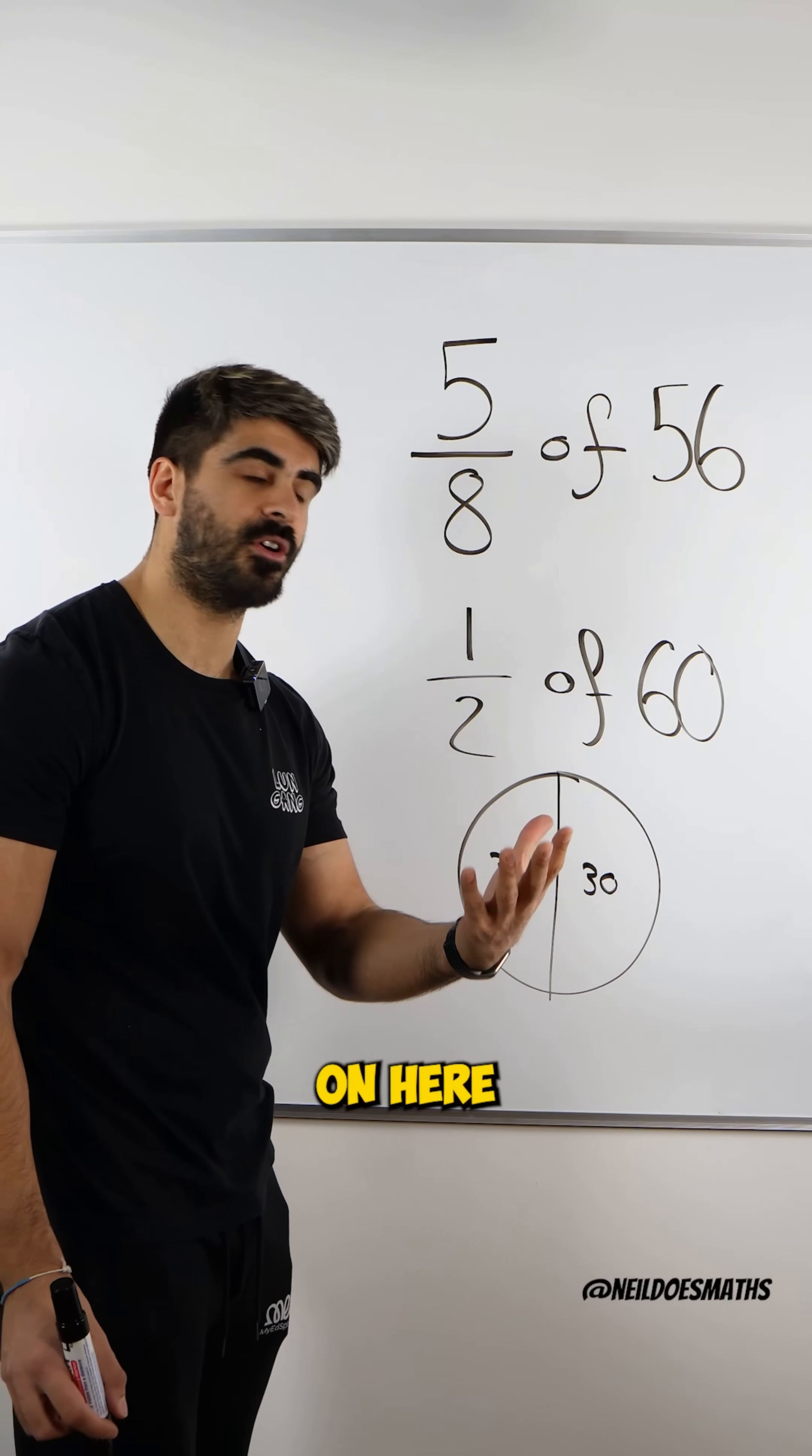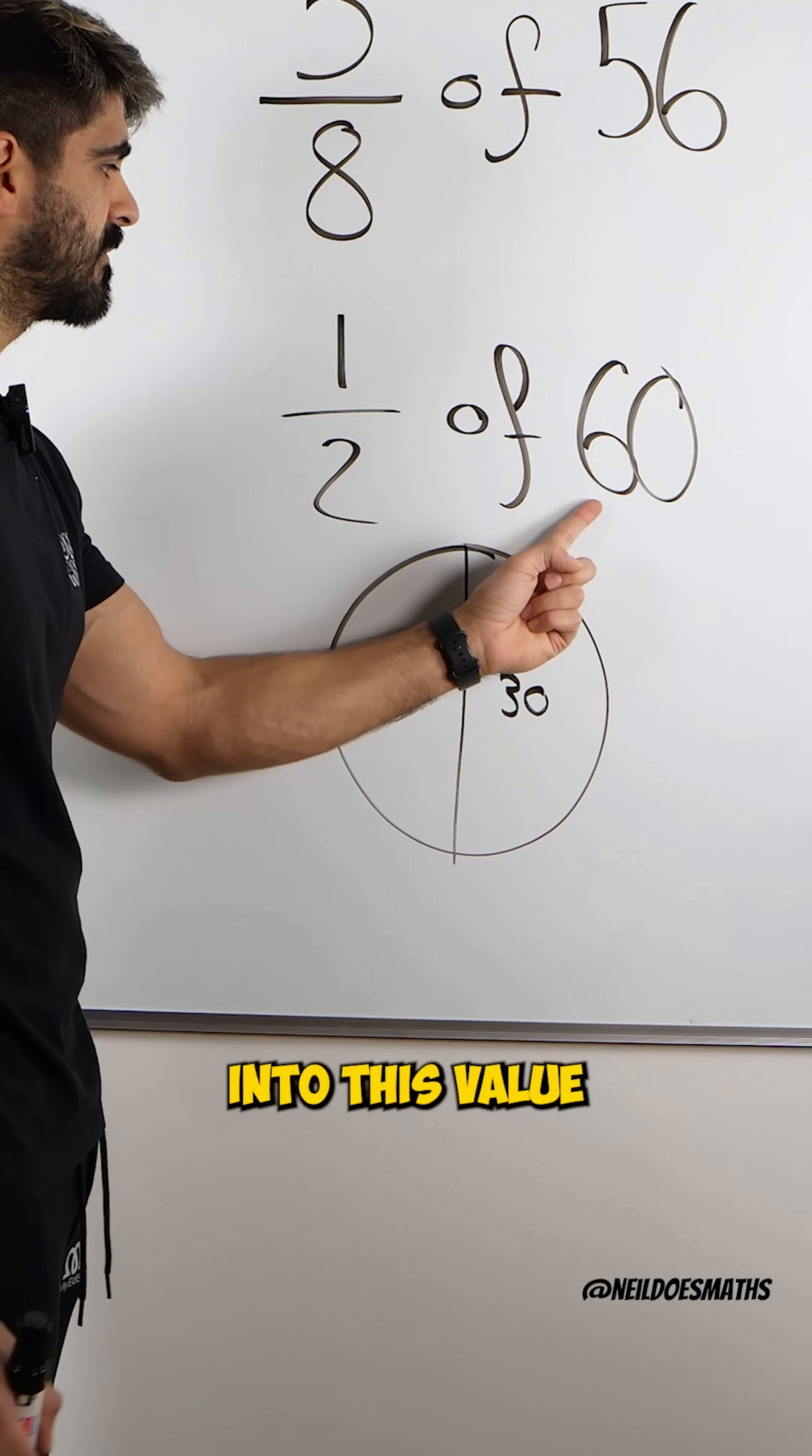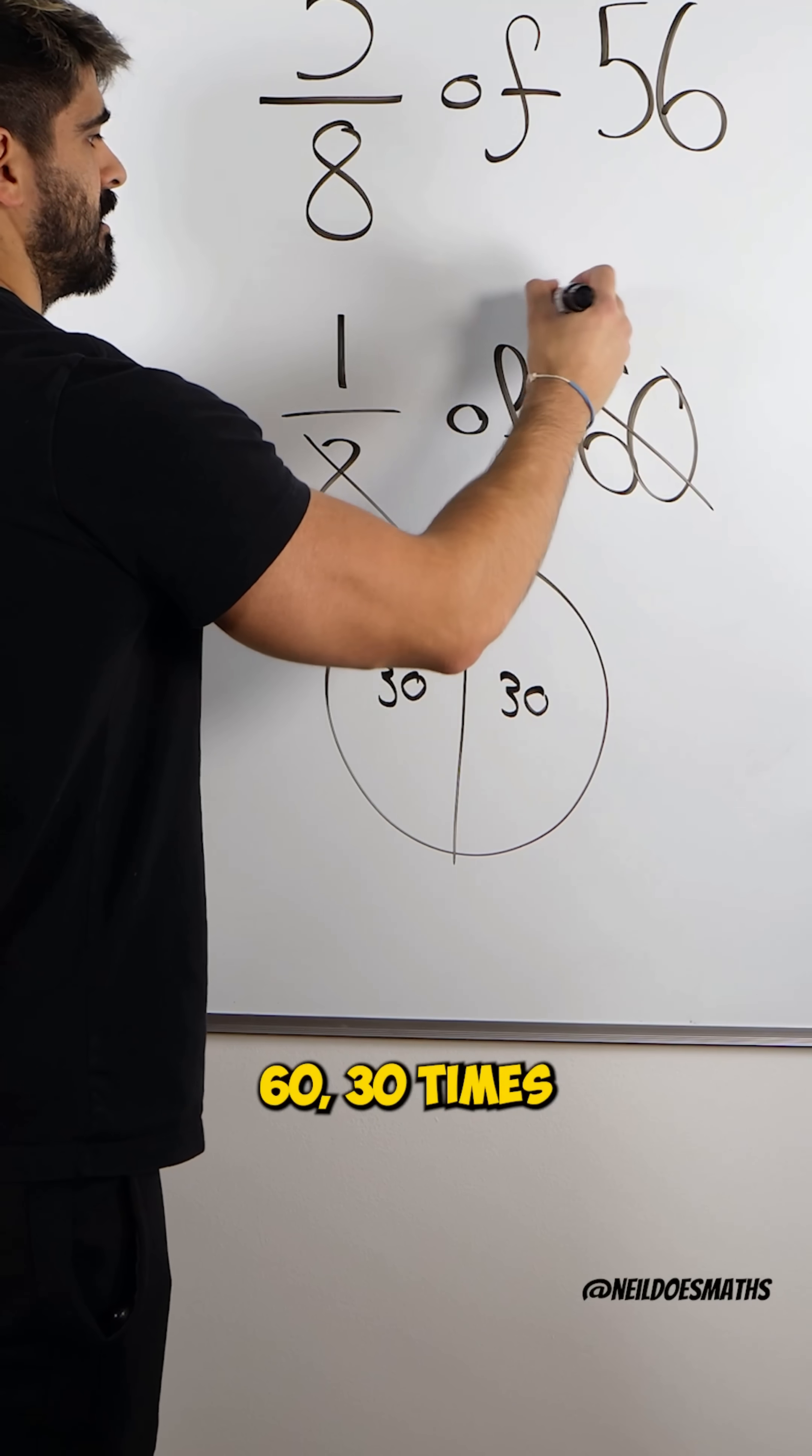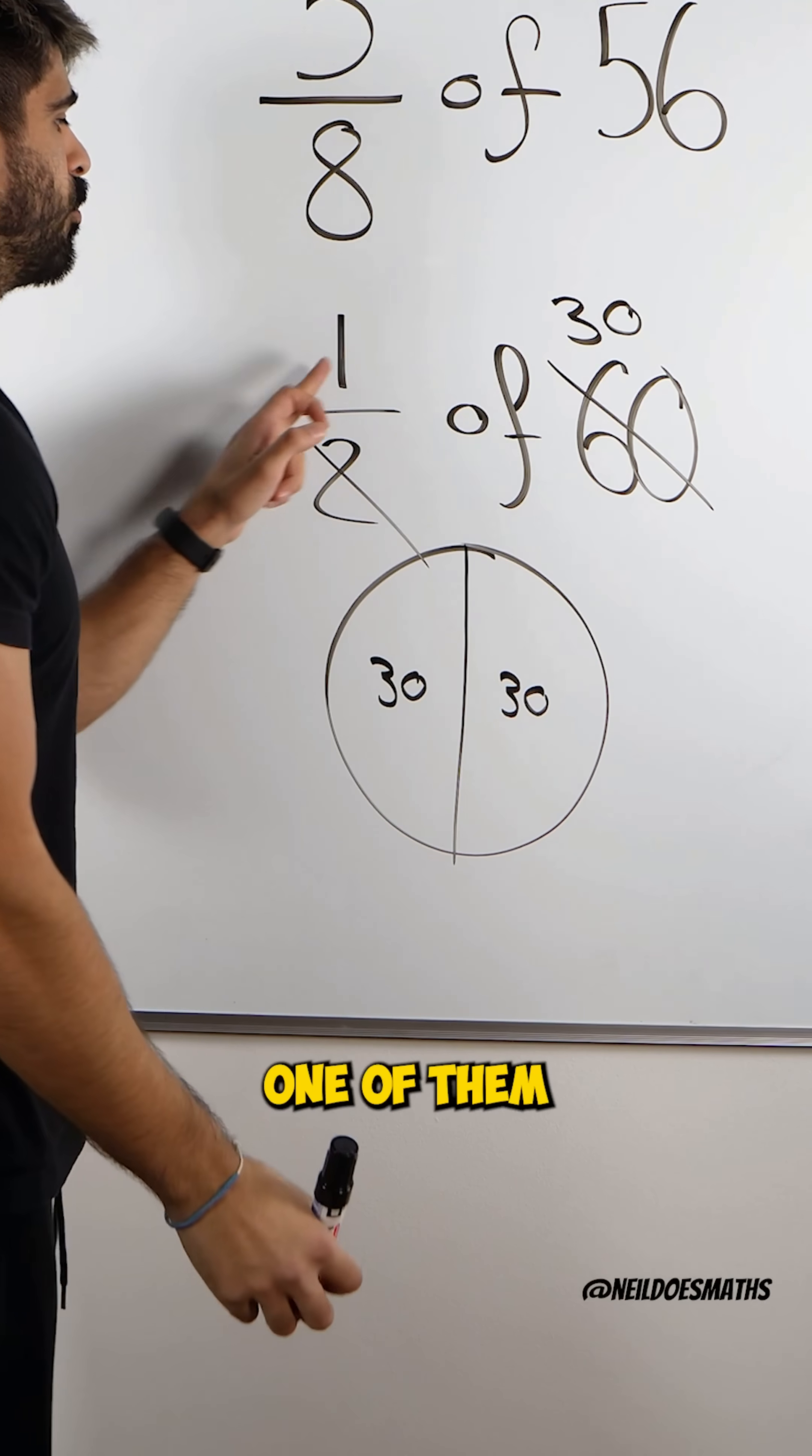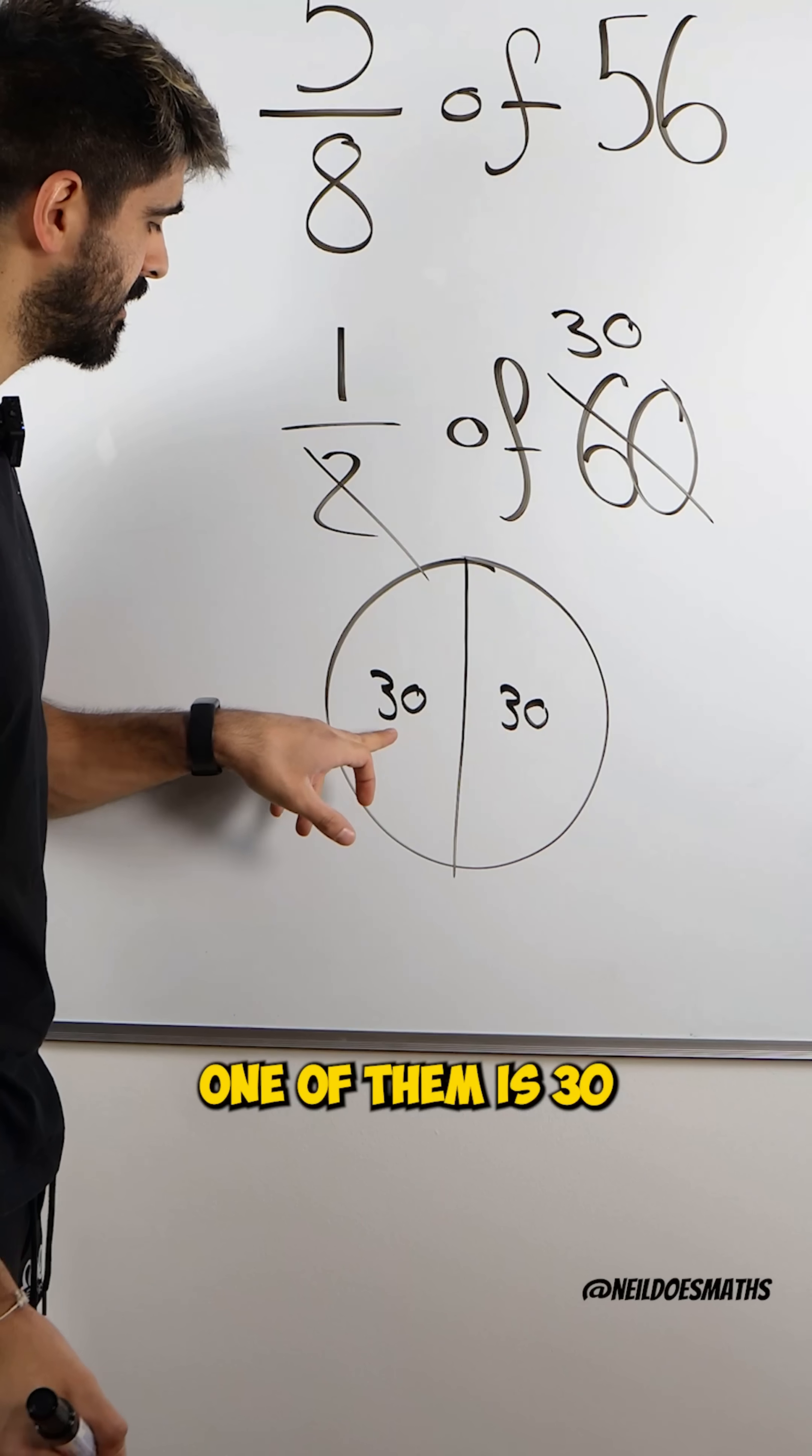Now, the quick way of what's going on here is you're just doing the denominator into this value. 2 goes into 60 30 times, and we want one of them. One of them is 30.